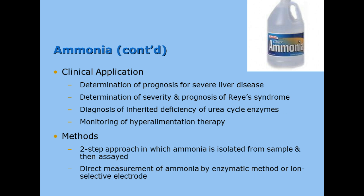Ammonia — whether in your bloodstream or in a jug — is toxic to have floating around. We use ammonia levels to determine severe liver disease; a high ammonia means severe liver disease. It can also be used for the prognosis of Reye's syndrome, which is associated with the ingestion of aspirin with a fever. An inherited deficiency of urea cycle enzymes can cause increased ammonia. We can also use it to monitor hyperalimentation therapy, which is giving someone tube feeding.